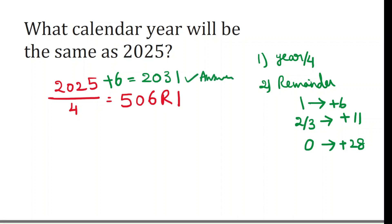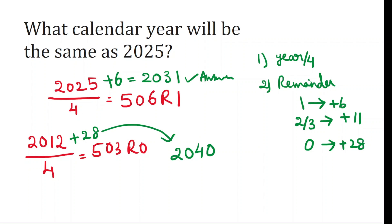Let us take another example. If the year is 2012, which year will have the same calendar? Divide 2012 by 4. This gives 503 with remainder 0. That means this is a leap year. So add 28 years to 2012, which gives 2040. So 2040 will have the same calendar as 2012.